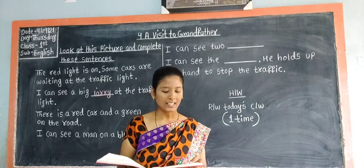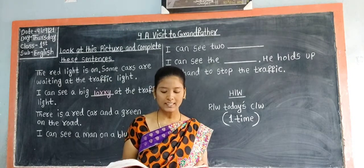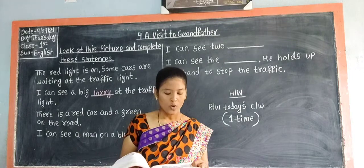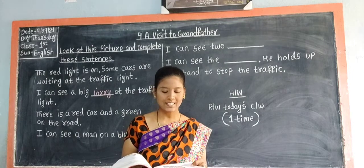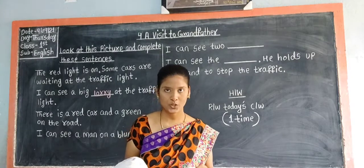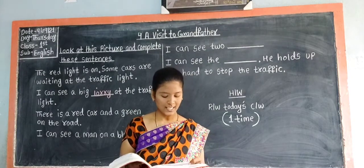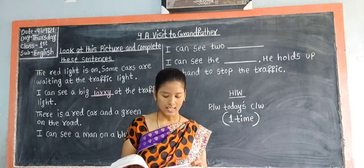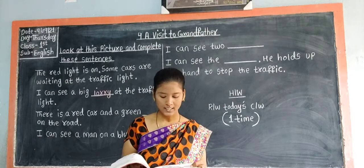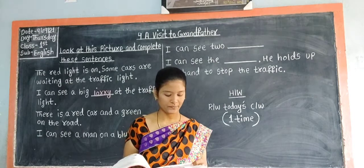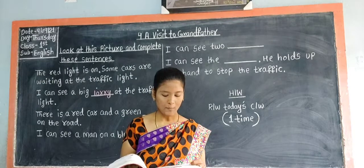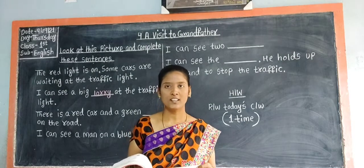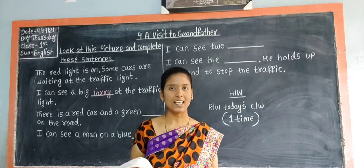Look at this picture and complete these sentences. We have to complete these sentences with the help of this picture. The first sentence is: 'The red light is on. Some cars are waiting at the traffic light. I can see a big ___ at the traffic light.' This first sentence is given as an example.